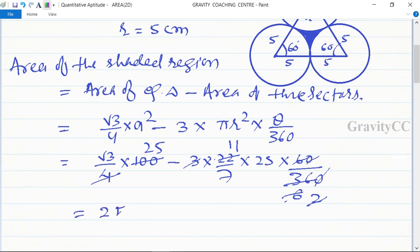This equals 25 and root 3. Root 3 is 1.732 minus 11 divided by 7, which is 1.571.